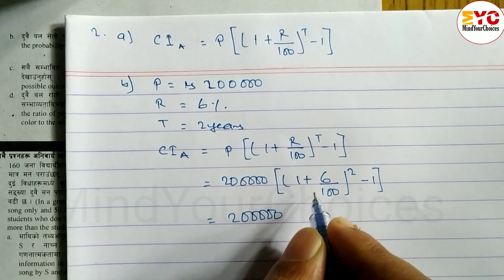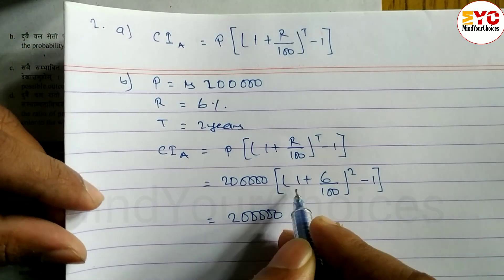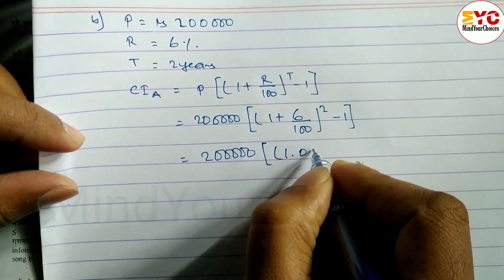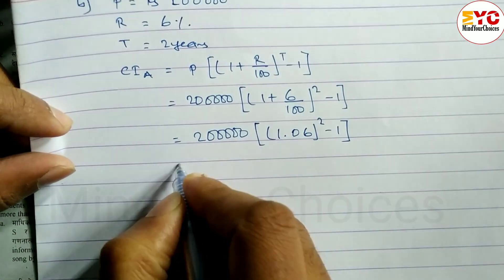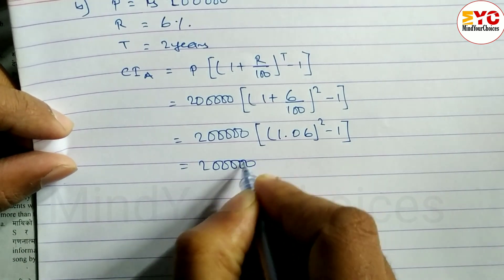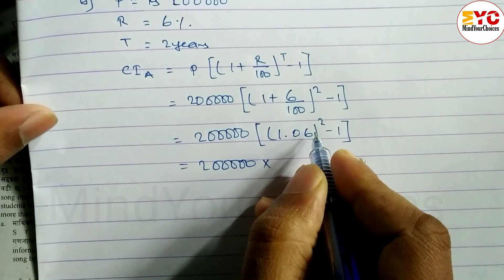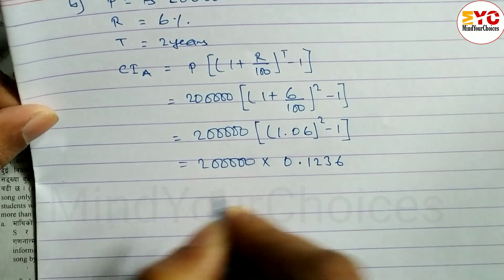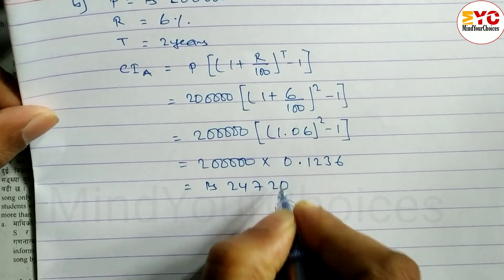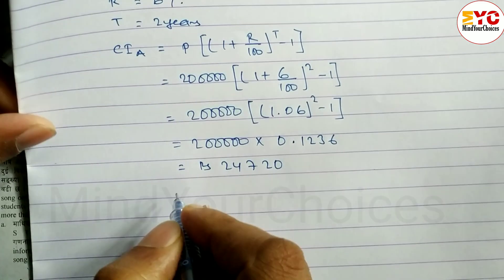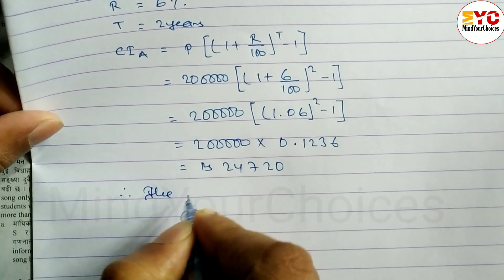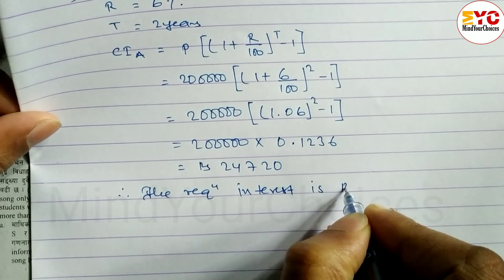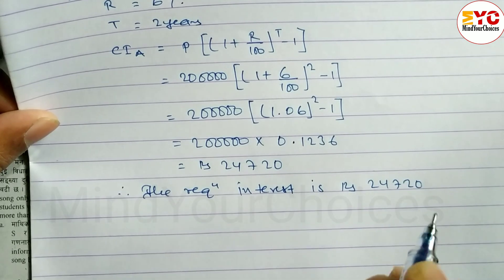Calculating: 6 divided by 100 = 0.06, so 1.06 squared = 1.1236. Therefore CI = 2 lakhs × 0.1236 = Rs. 24,720. The required interest for Scheme A is Rs. 24,720.